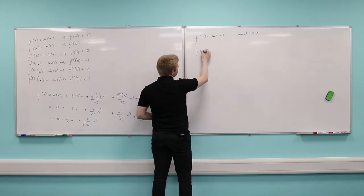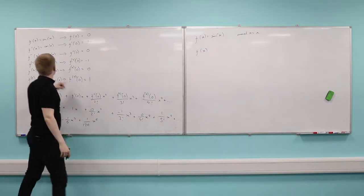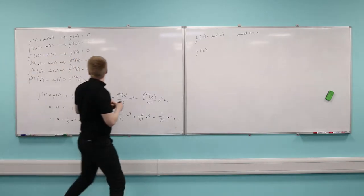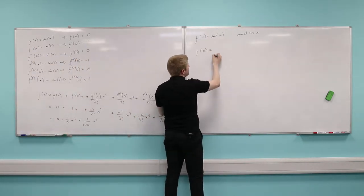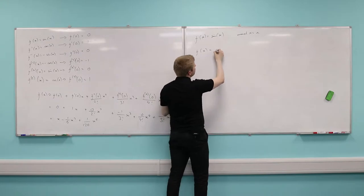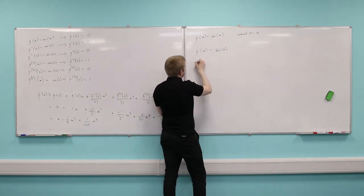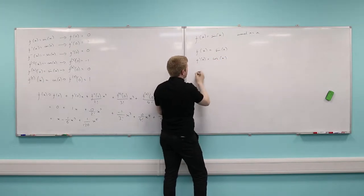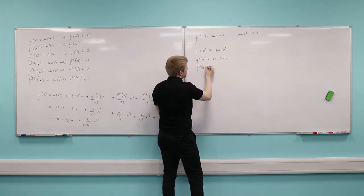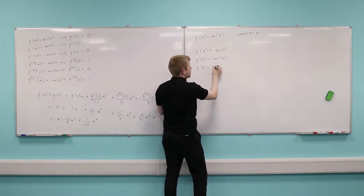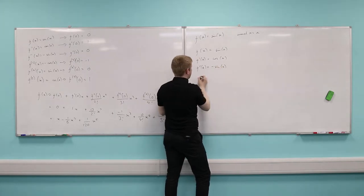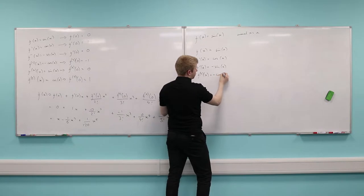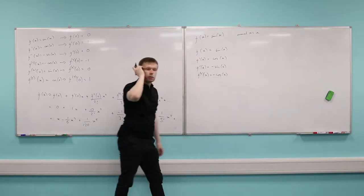First things first, I set it up in exactly the same way as before — I find all my derivatives. So the first one is just my function. My first derivative is just equal to cosine. My second derivative is just equal to negative sine. And my third derivative is just equal to negative cosine. And I could carry on going like this, but just to illustrate.